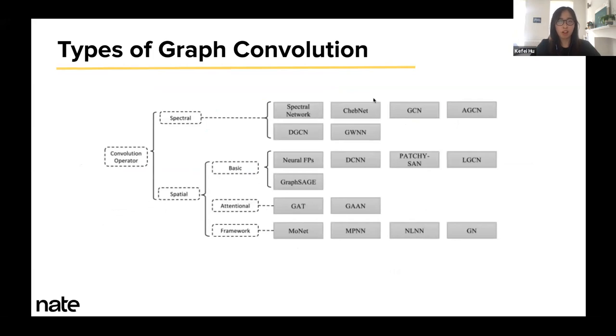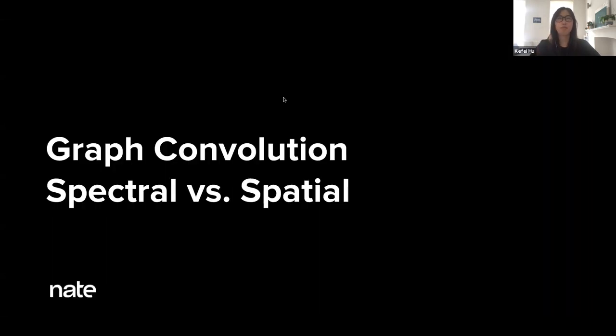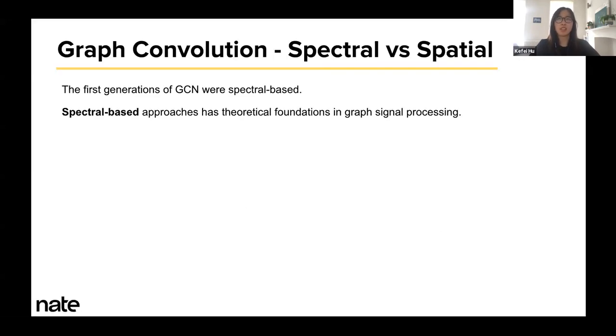There are many variations of graph convolution, but typically they can fall into two categories: spectral and spatial-based. In the next couple of slides, I will explain the differences between them. You will see that spatial is a much more efficient and scalable approach than spectral. Everyone following so far? Any questions? All right, I'm going to dive in deeper.